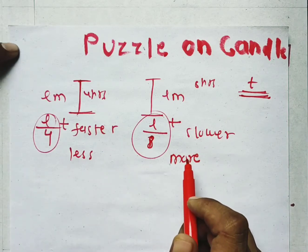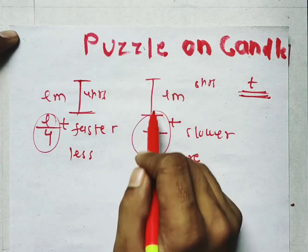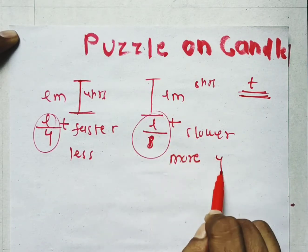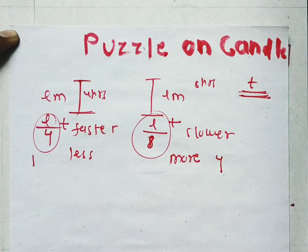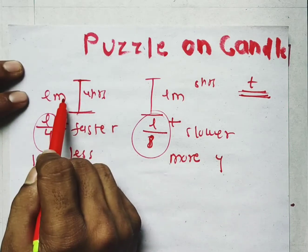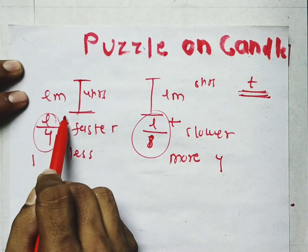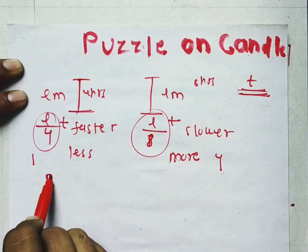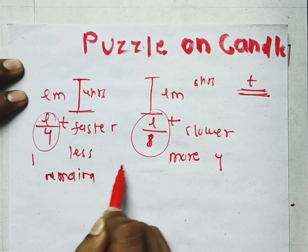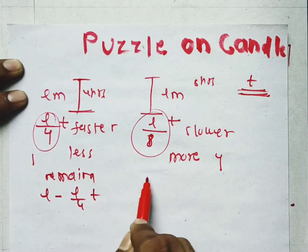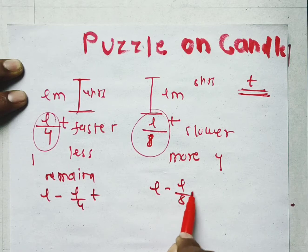Since more length remains in the slower candle, it must be 4 times the other — so the ratio is 4 to 1. Initially the length was L meters. After burning for T time, the remaining length of the faster candle is L minus L/4·T, and the remaining length of the slower candle is L minus L/8·T.